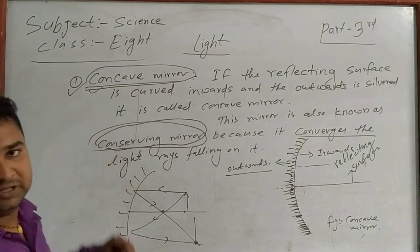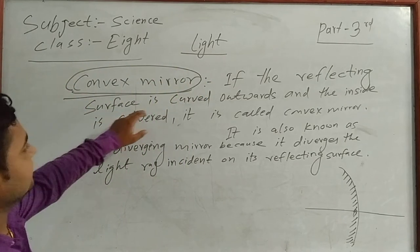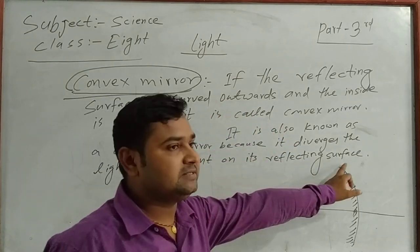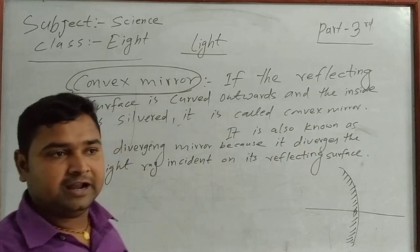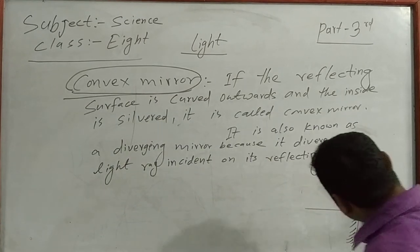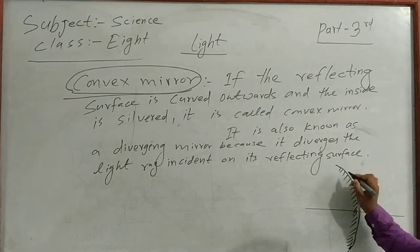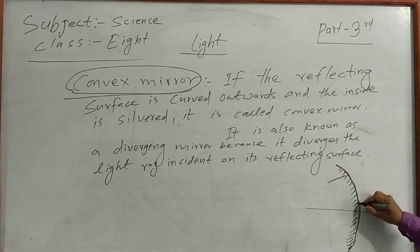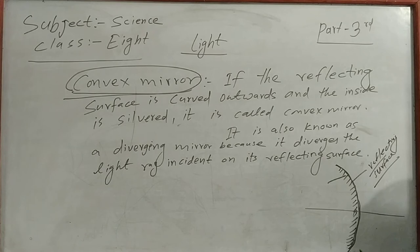Now, what is the convex mirror? If the reflecting surface is curved outside and the inside is silver coated, that is called a convex mirror. In the convex mirror, just the opposite of the concave mirror — the curved side is polished on the inside, and the outside is the reflective surface. The outside is the reflecting surface.